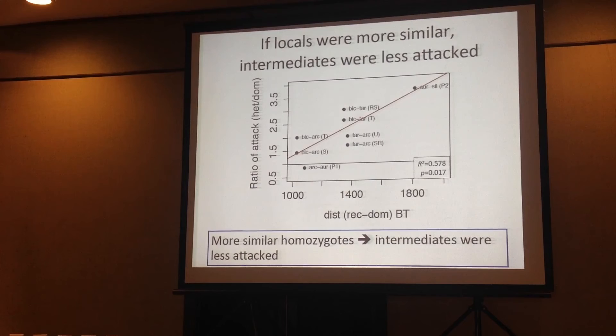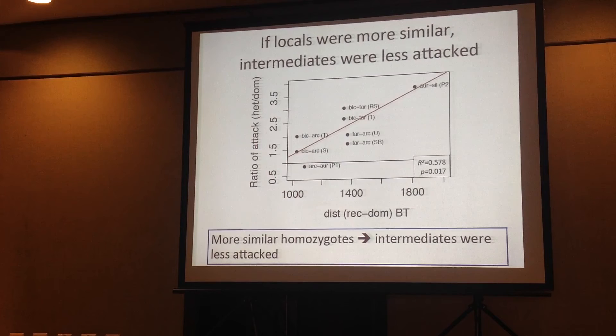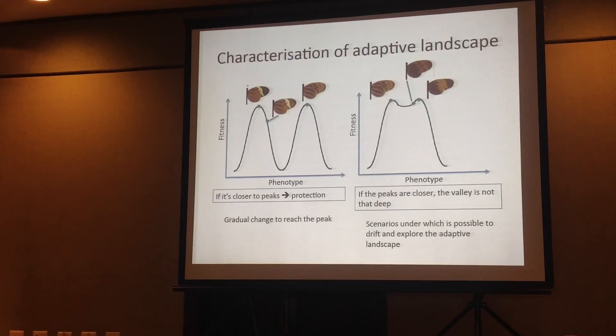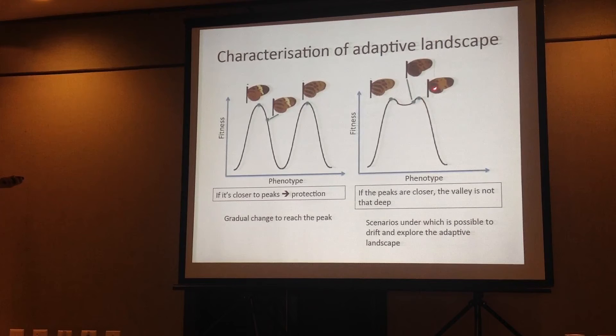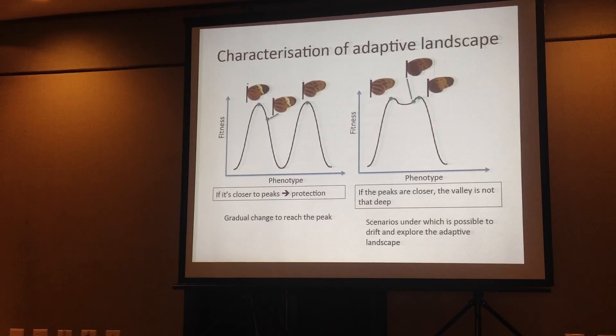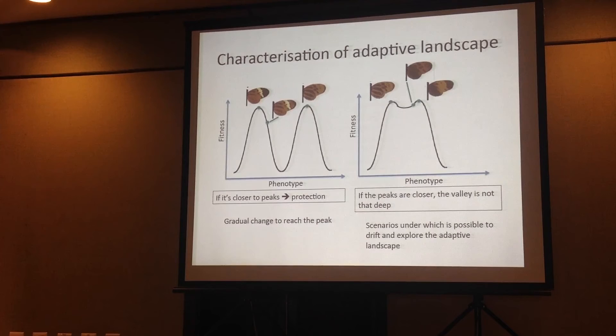We also found that when the two local morphs used were very similar, the intermediates were also less attacked. If the two local morphs were just too close phenotypically, the fitness valley was not that deep, and maybe selection on these intermediates was relaxed — allowing drift along these two peaks. This is another scenario where these butterflies can explore a bit more of the adaptive landscape in their populations.